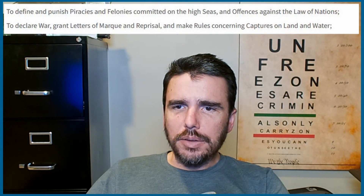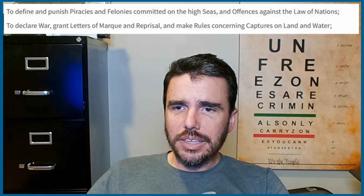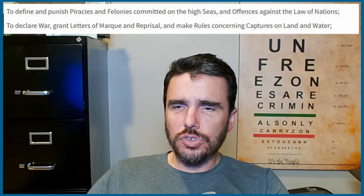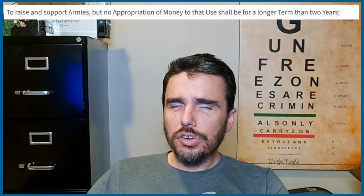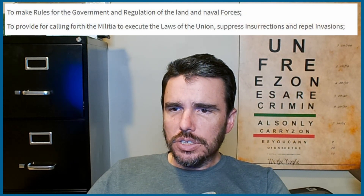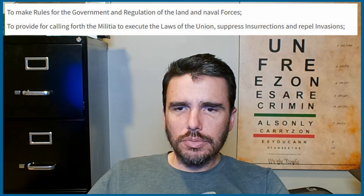Section Eight also gives Congress the power to provide punishment for counterfeiting, establish the post office, define and punish piracies and felonies on the high seas, declare war, and to raise and support armies — though no military appropriation shall be for longer than two years. We were never supposed to have a long-term standing army. The navy is treated differently since building and maintaining ships is a longer-term prospect. Congress also provides for calling forth the militia to execute the laws, suppress insurrections, and repel invasions.